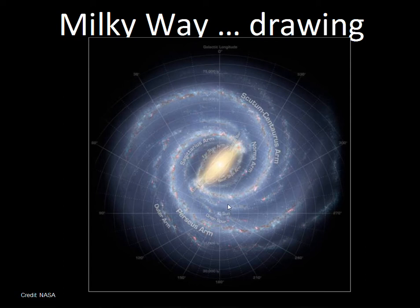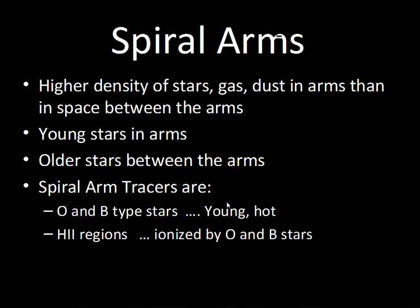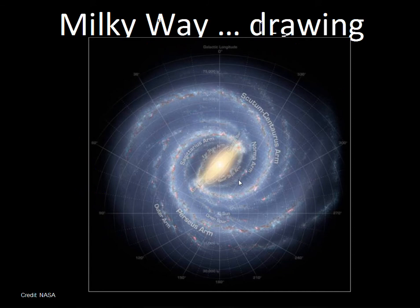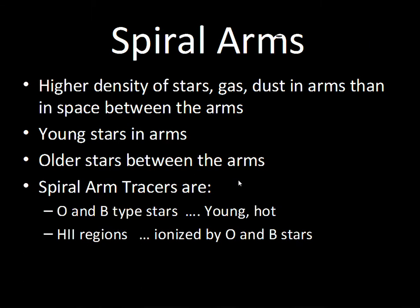From the Sun, if we look in a particular direction we see a certain constellation, and astronomers have named some of the arms of our galaxy with those constellation names. When we look at the spiral arms, we see higher density for stars, gas, and dust. In between the spiral arms there is lower density — fewer particles per cubic centimeter. Another difference is that in the spiral arms we tend to see very young stars, while older stars are found in between the arms.